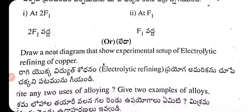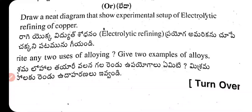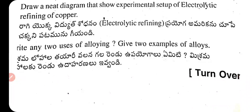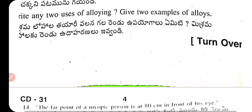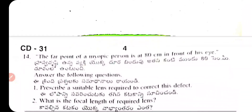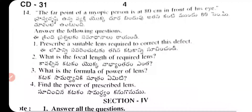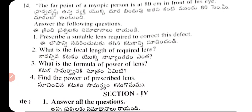Question 13: Draw a neat diagram showing the experimental setup of electrolytic refining of copper. Write any two uses of alloying and give two examples of alloys.